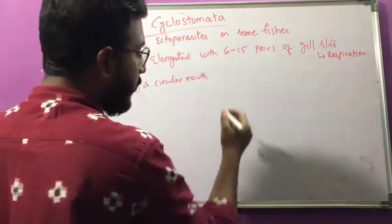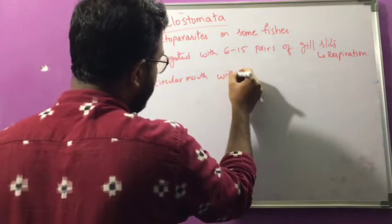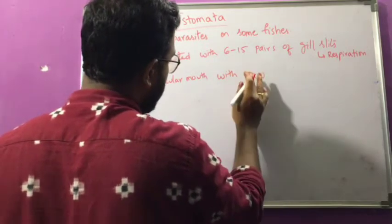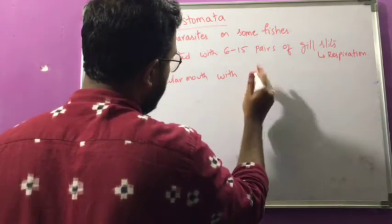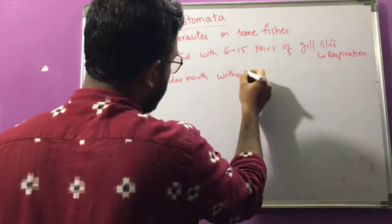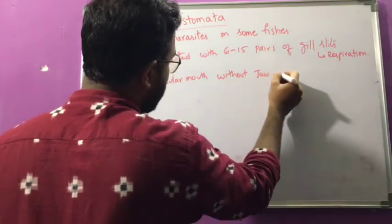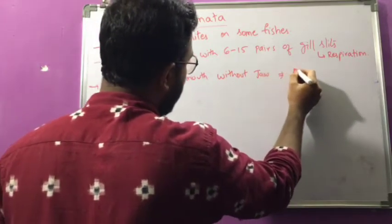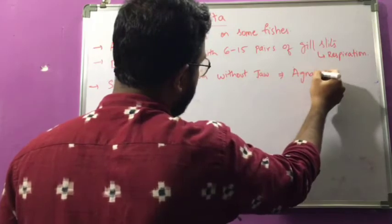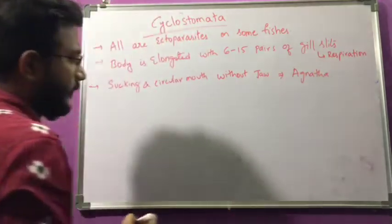As I already mentioned, these animals are without jaws — that's why they are called Agnatha, belonging to Division Agnatha.